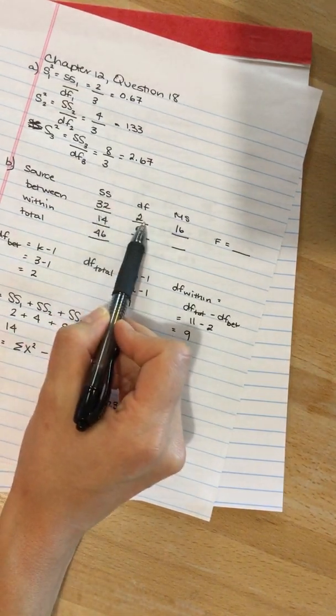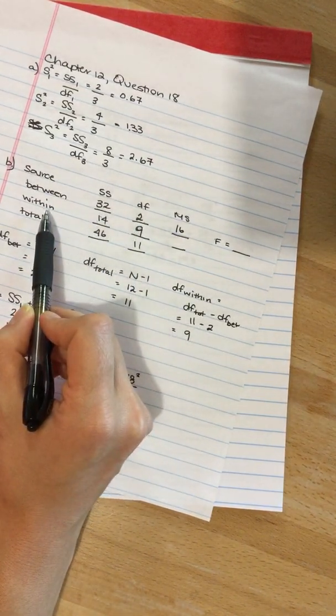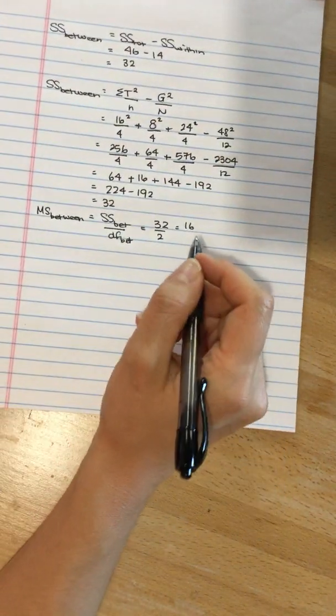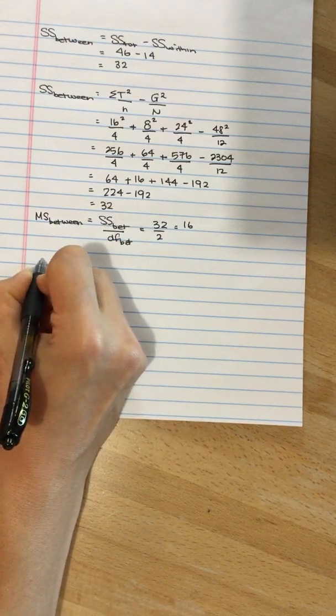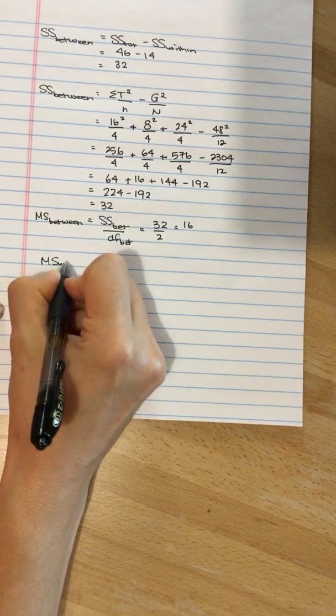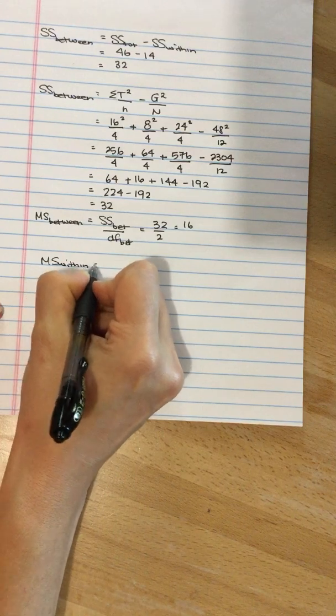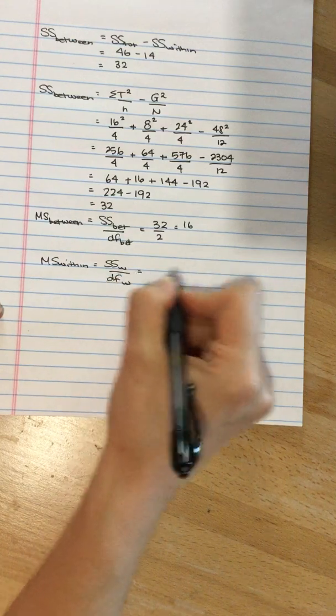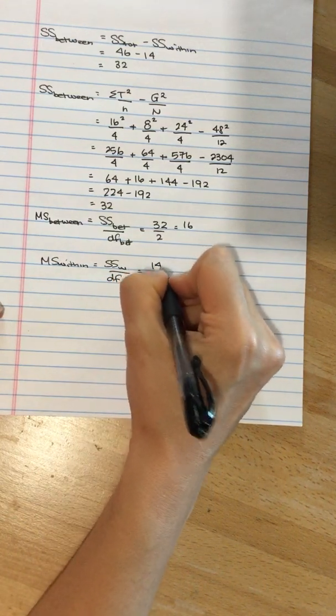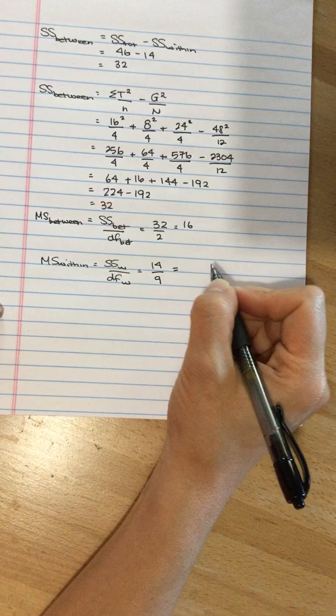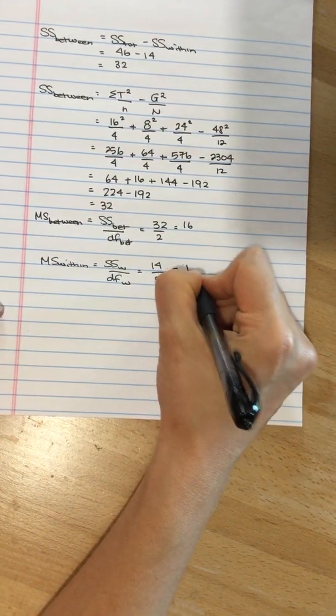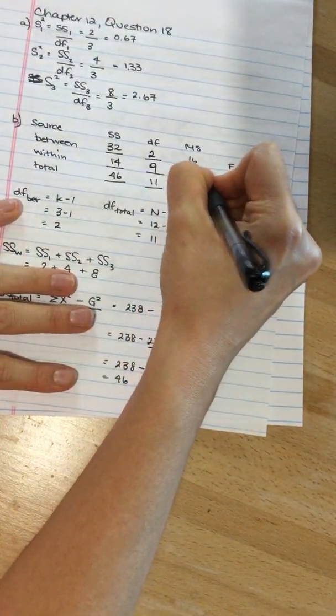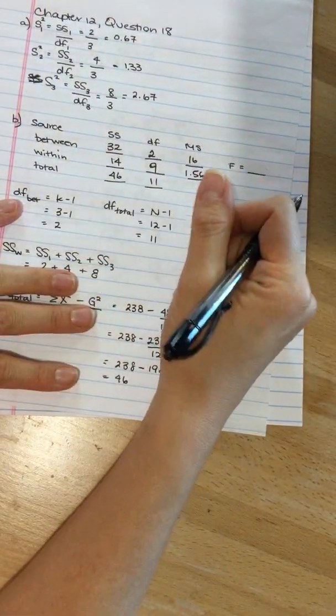So what I did was 32 divided by 2, and now for sum of squares within, I'm going to take 14 and divide it by 9. But I'm going to show my work, right people? So mean square within equals sum of squares within divided by degrees of freedom within. So that was 14 divided by 9, which isn't a pretty number. It's 1.56. We'll put that in our table. Nice and handy to have everything organized.